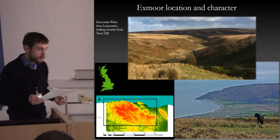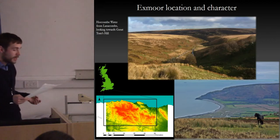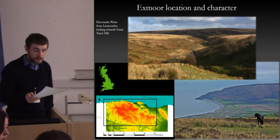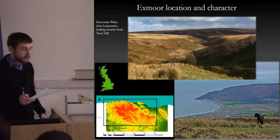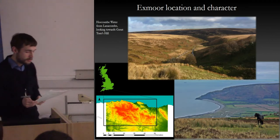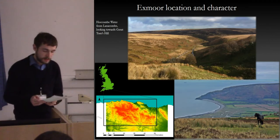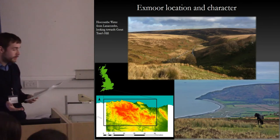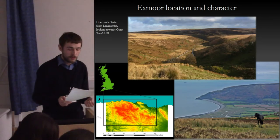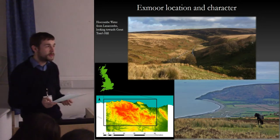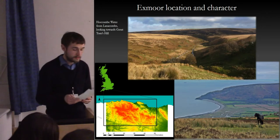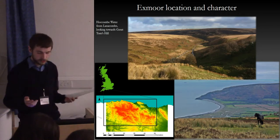Exmoor is a remote upland area in the southwest of Britain, partly within the modern counties of North Devon and West Somerset. The region's prehistoric landscapes are not widely known, although Exmoor is home to extensive but fragmentary evidence of the landscapes of the late third and early second millennium BC.